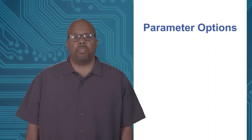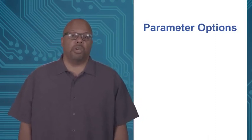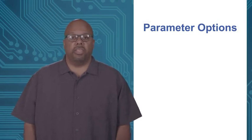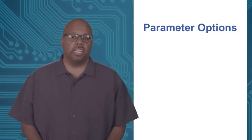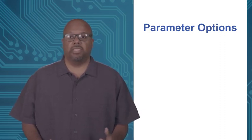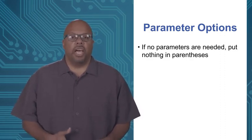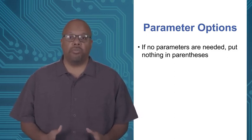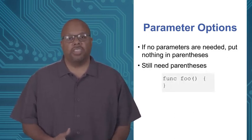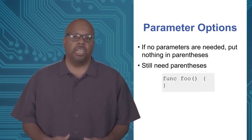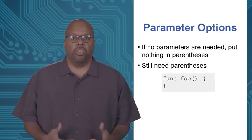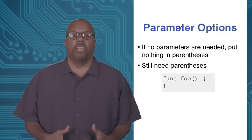Having parameters is very common for a function, since functions often need some kind of input data to operate on. Sometimes a function does not need parameters — maybe it just does something static, or it gets input from the user typing it in directly, or maybe from a file. If that's the case, you still have to put the open paren, close paren in the declaration after the name — func foo, open paren, close paren — you just don't put anything in the parentheses, and the compiler knows there are no parameters.